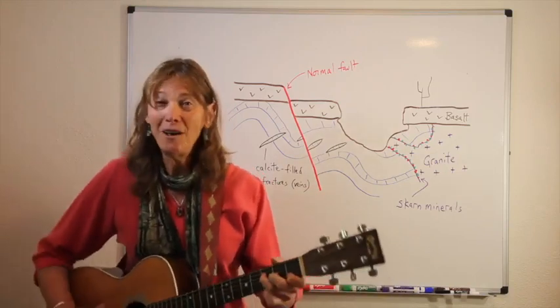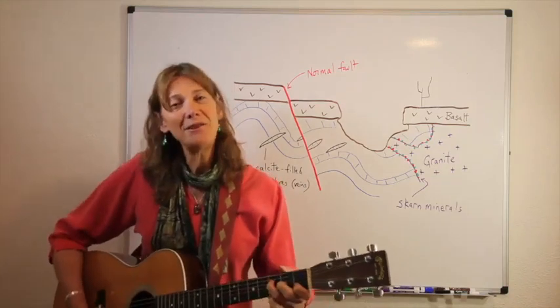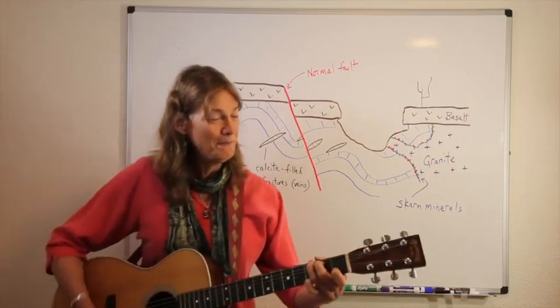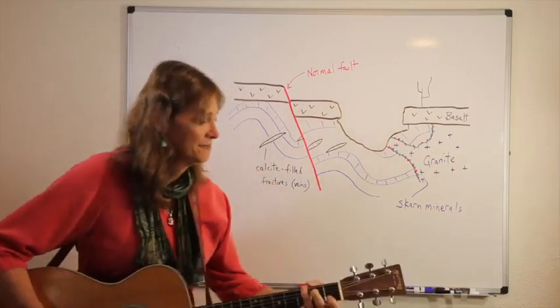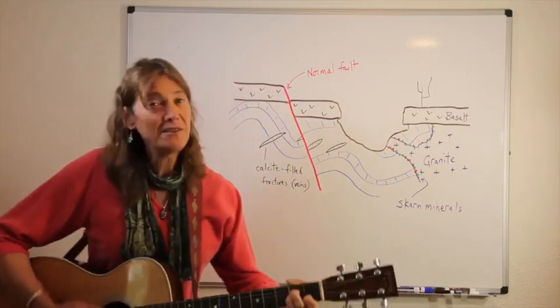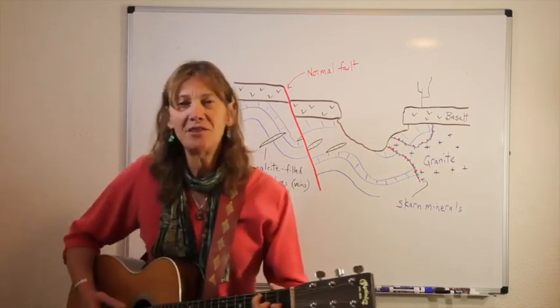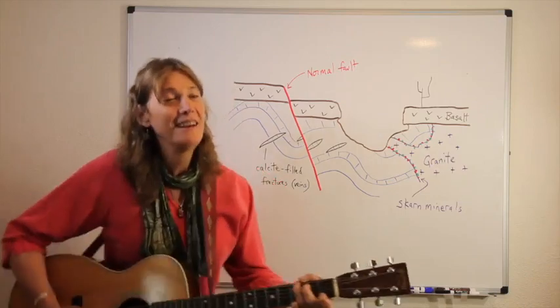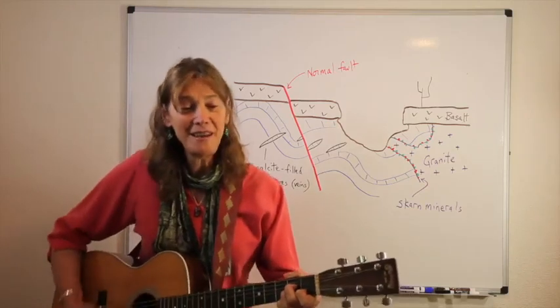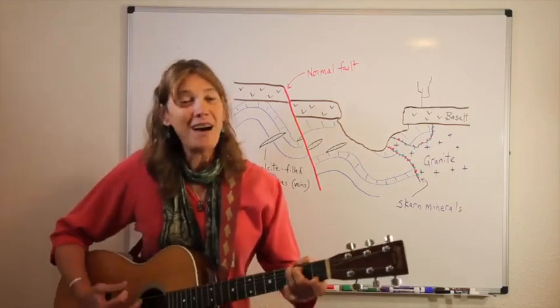You said all your faults are normal. Well, I don't think that's so. You're much too complicated from your lives lived long ago. Up on top of everything, a basalt flow forms a ledge. It's more resistant to erosion, so it stands out from the edge of that dusty canyon.